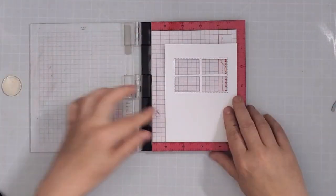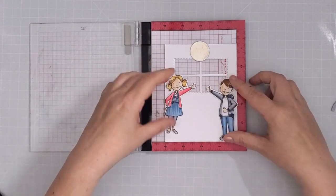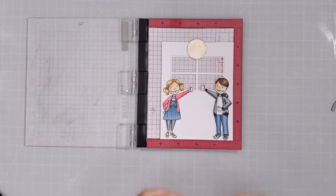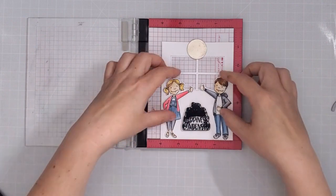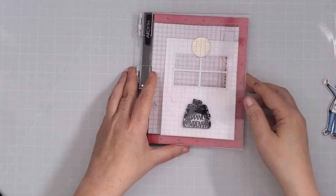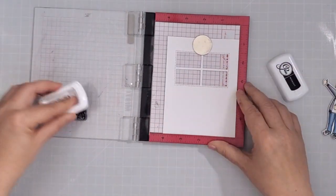For the sentiment I put the window panel into my mini MISTI and then I placed the little lady and gentleman where they will go just so I could get the placement of the sentiment exactly right. I inked it up with midnight ink and I stamped it down.